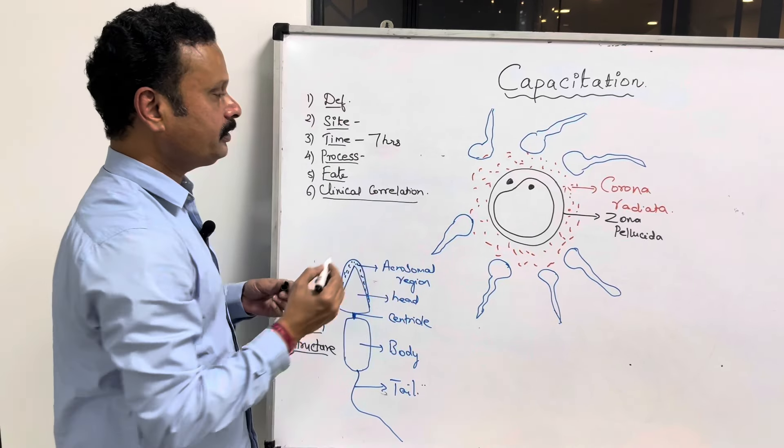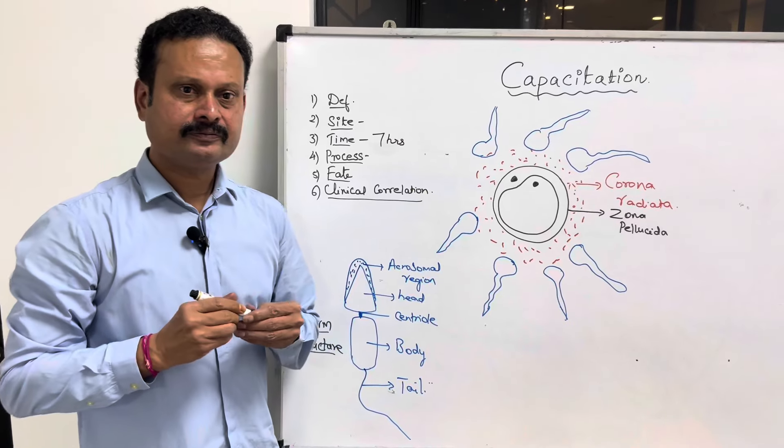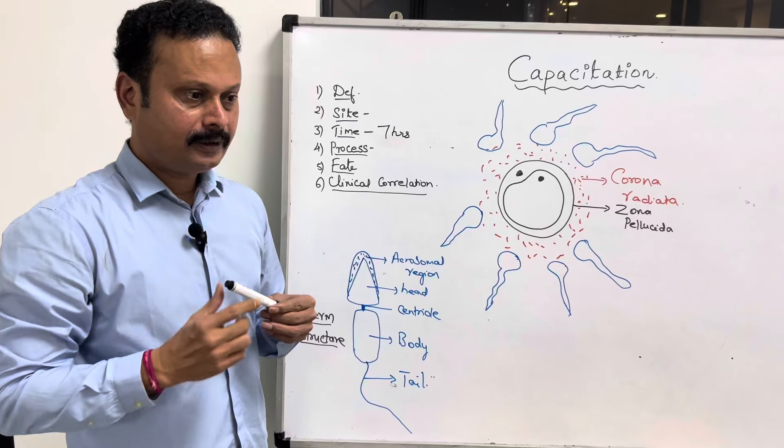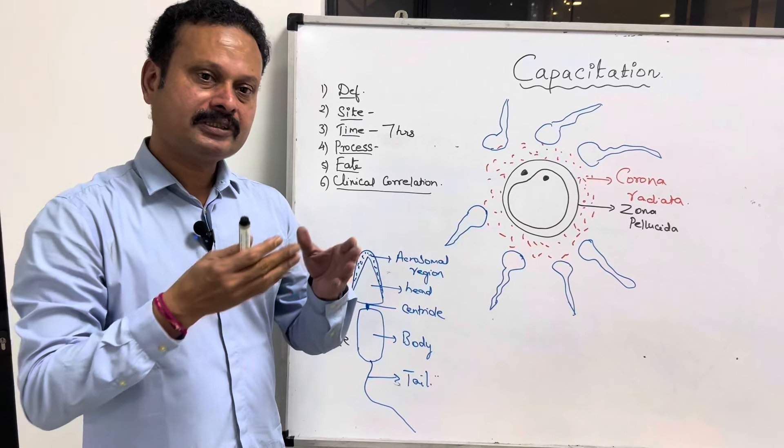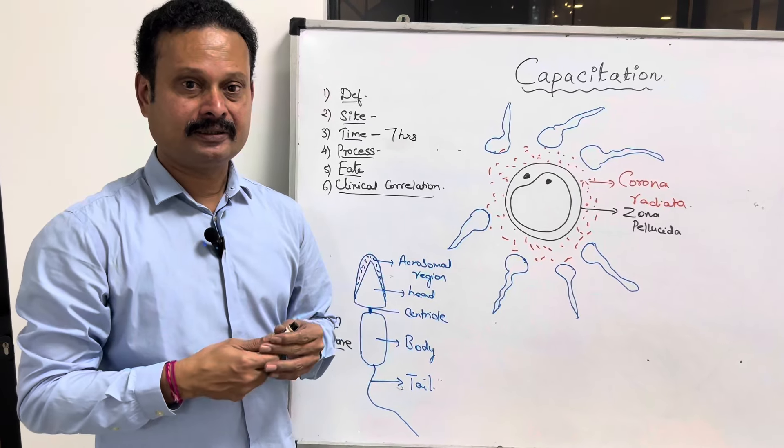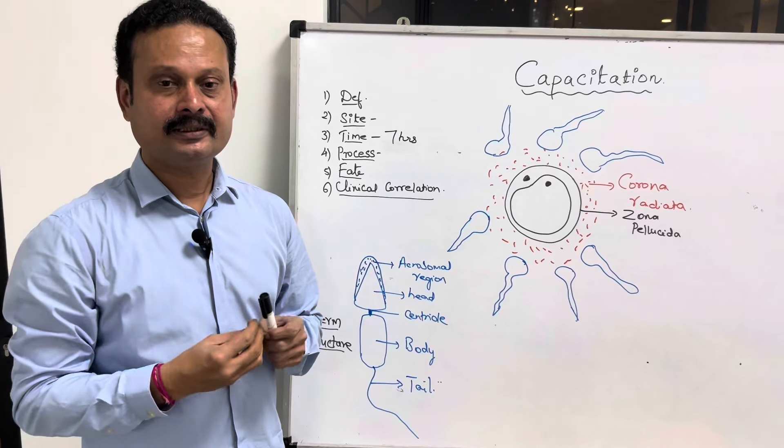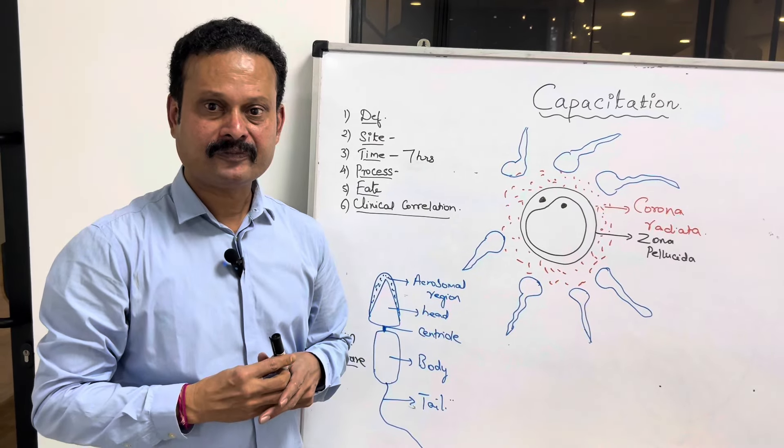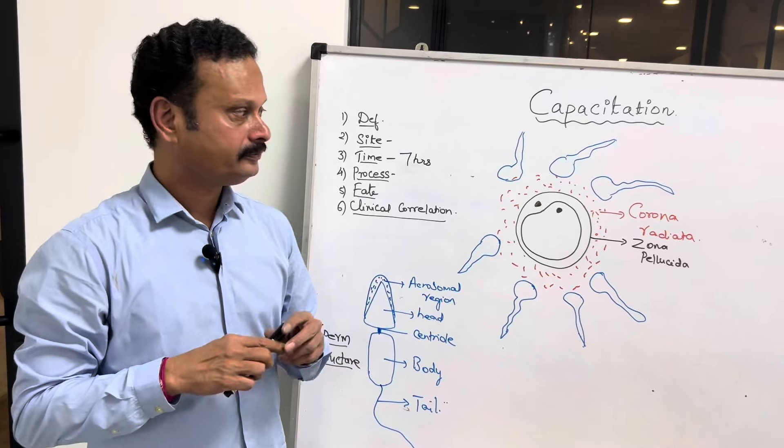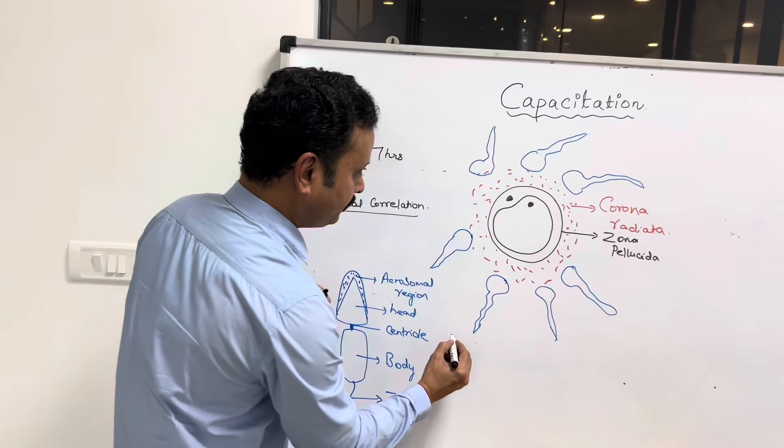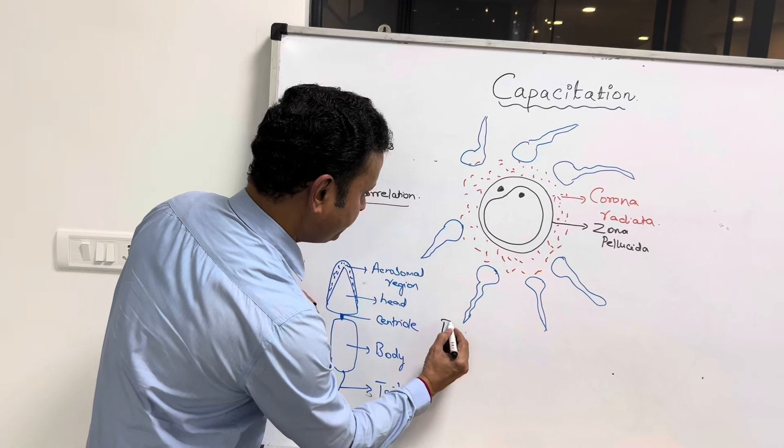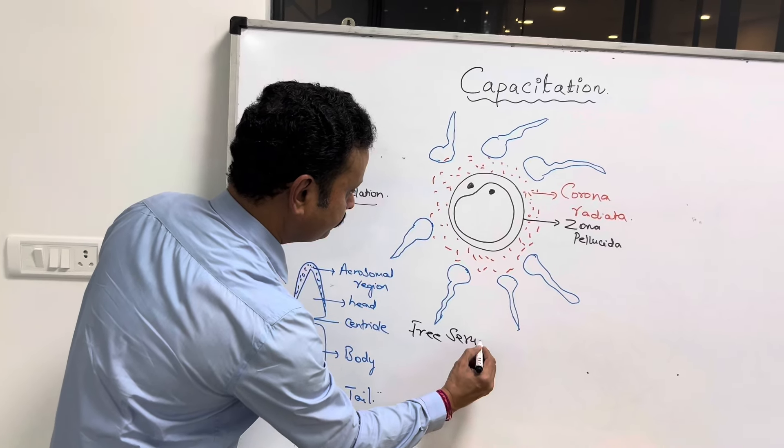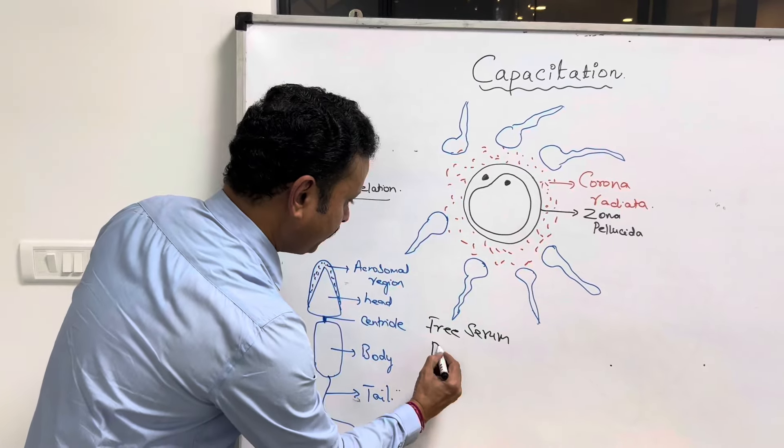Clinical correlation: in in vitro fertilization, or in layman's language, test tube babies, the capacitation of sperms is done by treating the sperm ejaculate and placing it in a solution containing free serum and dextran.